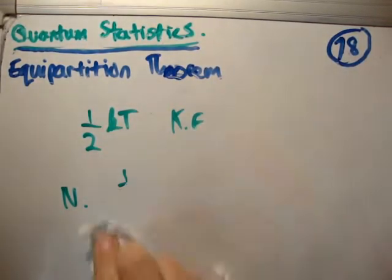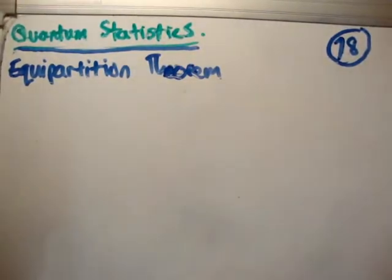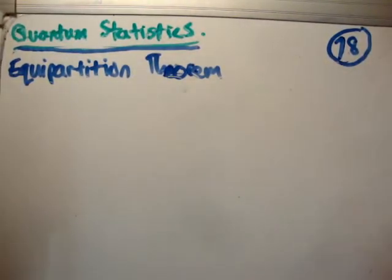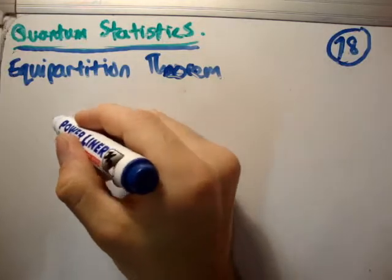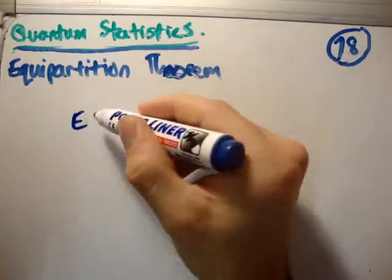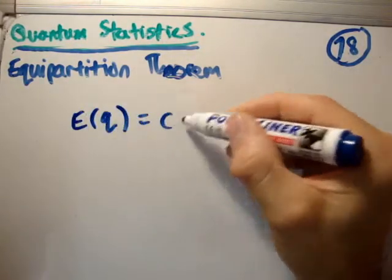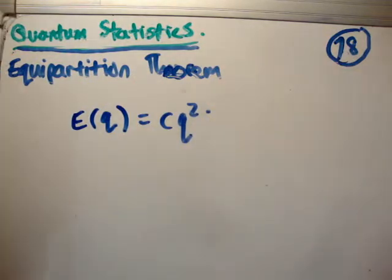However, the important thing is here is to work out where this applies. And I'm going to tell you it only applies where your system stores energy quadratically. That means E of q is equal to cq squared. Q can be anything. It can be potential energy, it can be momentum, velocity, you name it. However, it must store it quadratically. And you'll find that many classical systems do this because the equipartition theorem is used in many places.